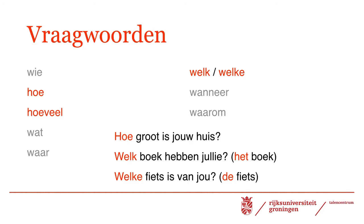Hoeveel is a special one. In English, this is translated as 'how many.' As you can see, hoeveel is written together. However, when the interrogative pronoun 'hoe' is followed by another adjective, you write it separately — for example: Hoe groot is jouw huis? Meaning: how big is your house?